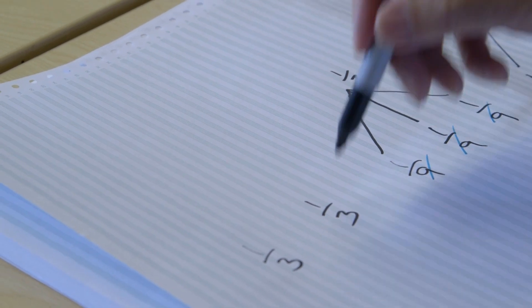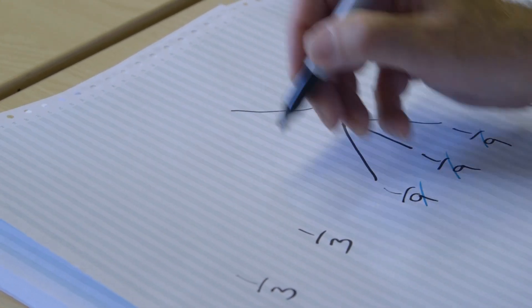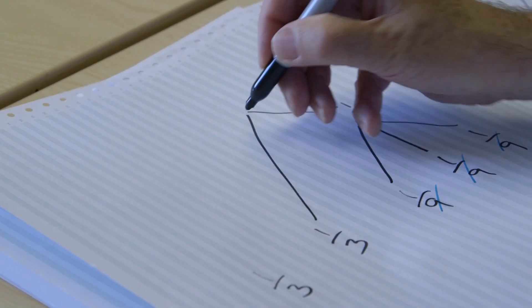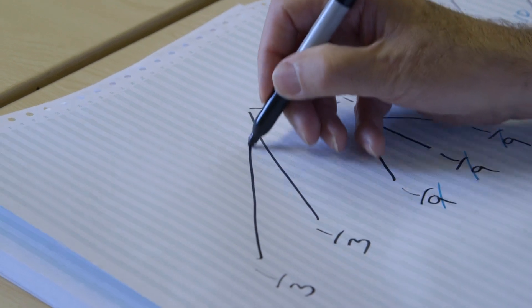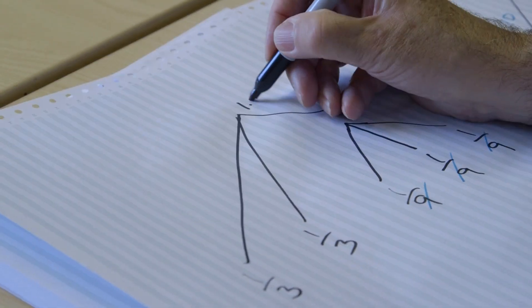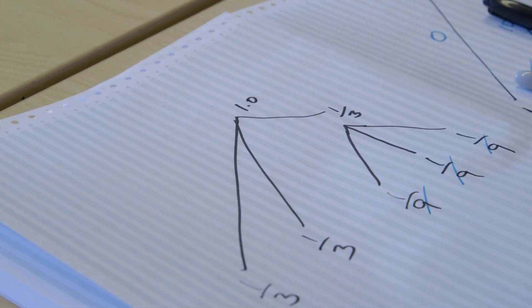And then if you're combining in 3s, well, you've got a third, a third, a third. And again: third, third, third, giving probability 1.0.